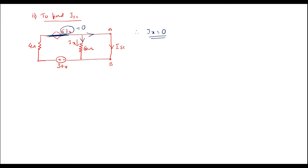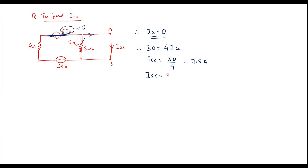Now let me analyze this simplified circuit. No current flows through the shorted path of the dependent source, so current flows only through the 4 ohm resistor. Applying KVL: 30 = 4·Ix, therefore Ix = 30/4 = 7.5 amps. Therefore ISC = Ix = 7.5 amps.